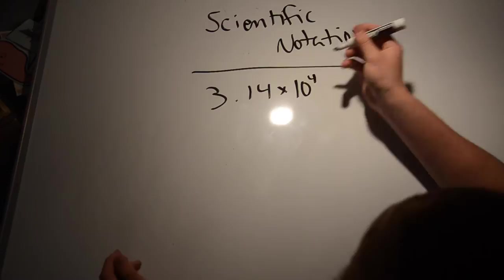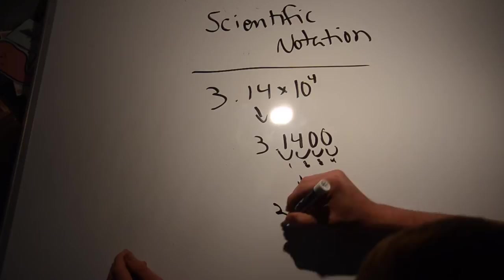So, for example, if you take the number 3.14 times 10 to the 4th, you move it to the right, four spaces, and you get 31,400.